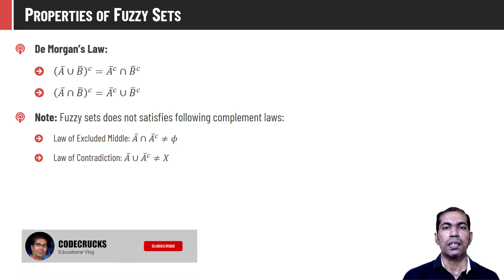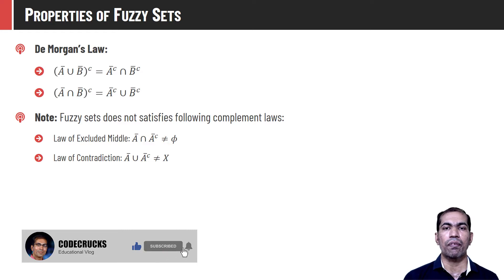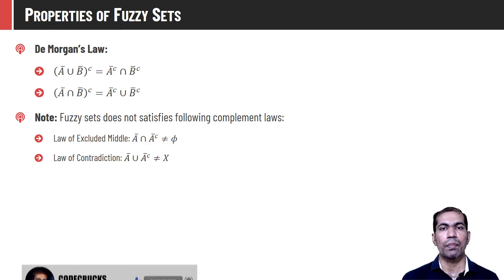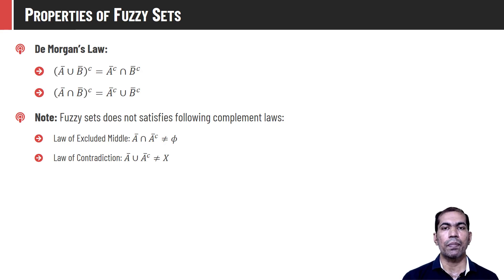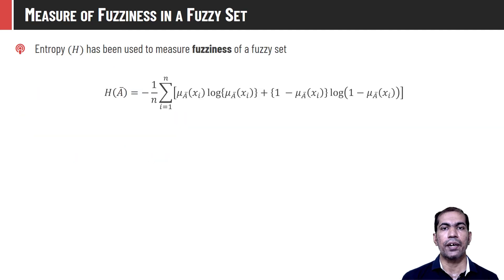Crisp sets also follow the law of excluded middle and the law of contradiction, but fuzzy sets do not follow these two properties. That is, A intersection A-complement will not be phi, and A union A-complement will not be the universe of discourse. These two properties are different from the crisp set.